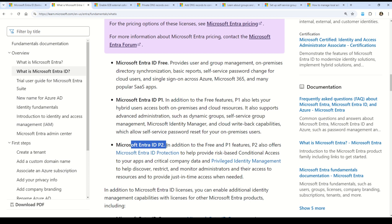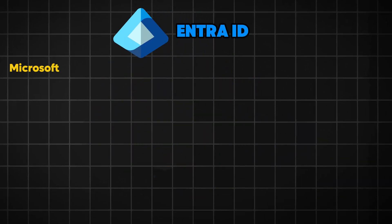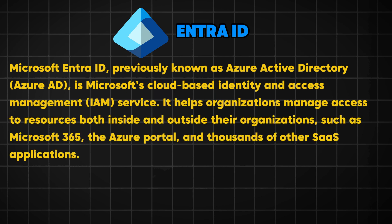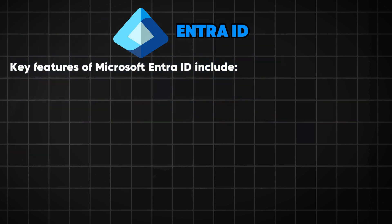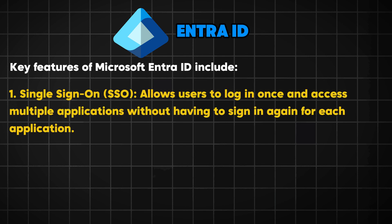Let me explain Microsoft Entra ID in my own words. Microsoft Entra ID is a cloud-based identity and access management (IAM) service that provides a unified platform for managing user identities and access privileges across various Microsoft products and also non-Microsoft applications and services. It was formerly known as Azure Active Directory or Azure AD. Key features include Single Sign-On (SSO), which allows users to sign into multiple applications with a single set of credentials, improving productivity and reducing password fatigue.